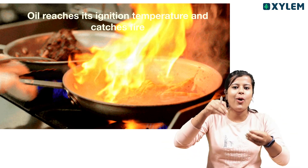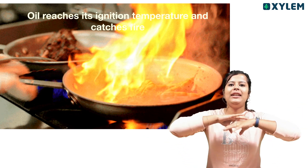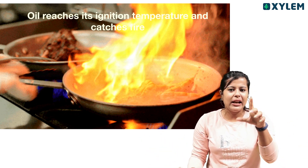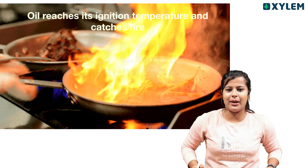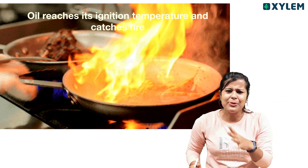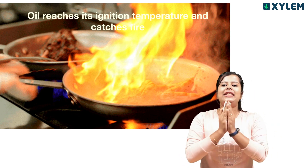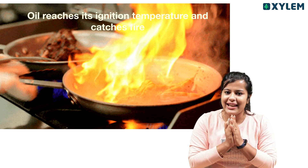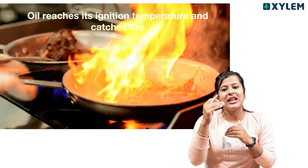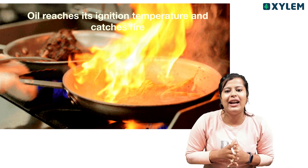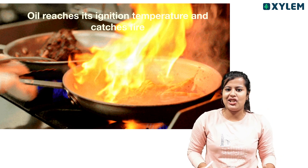For example, you can put a pan with oil and heat it. If you heat the oil, it reaches its ignition temperature and catches fire. That is why we say the ignition temperature of oil is reached when heated on the pan. The ignition temperature of oil is very low, which is why it catches fire when heated.